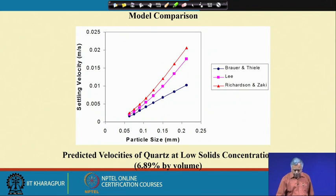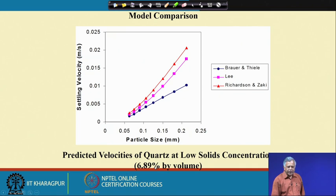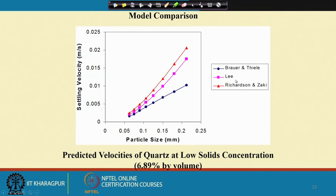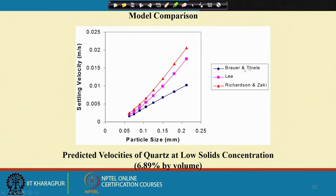Comparing the three models — Richardson-Zaki, Lee's model (extension of Concha-Almendras), and Brouwer-Thielis — using synthetic quartz particles at various sizes and 6.89% volumetric concentration, the predicted settling velocities from all three models are entirely different. The question becomes: which one should I use? My personal suggestion is the Brouwer and Thielis model because fundamentally it appears superior to the other two.